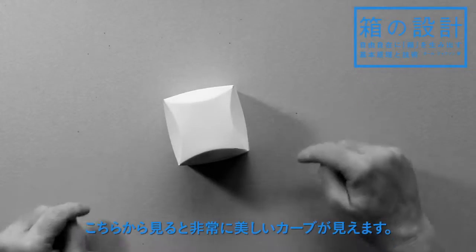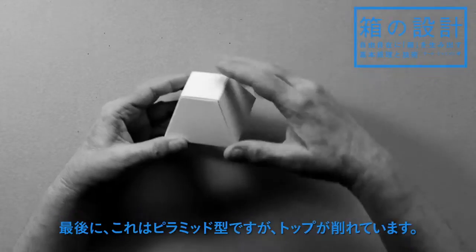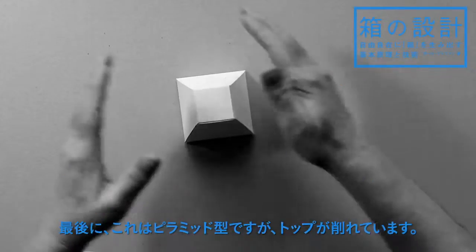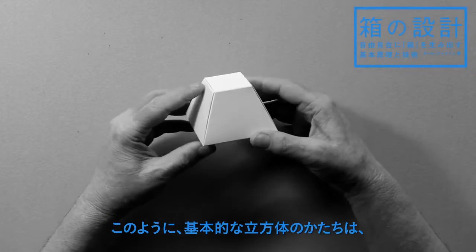Or finally this example, which is a pyramid without its top, where we're kind of shaving in the four sides. So there are many ways to distort a basic cube to create whole families of beautiful forms.